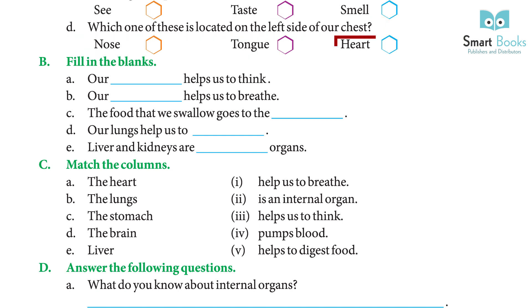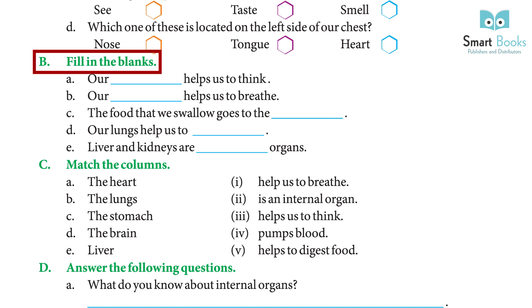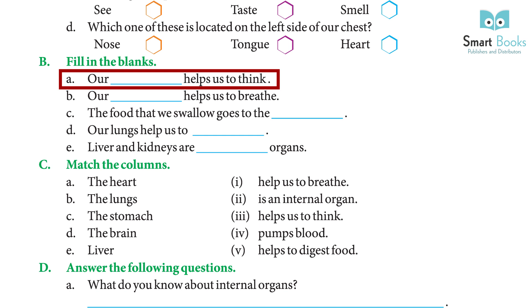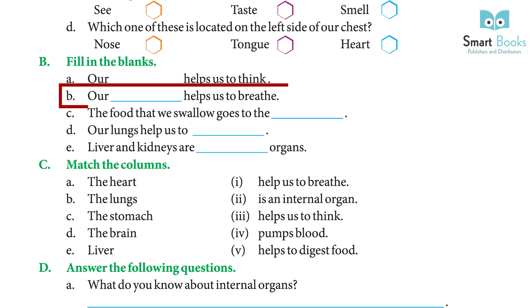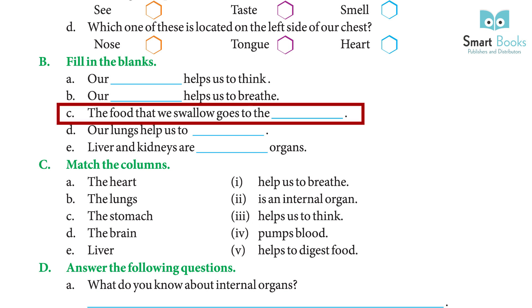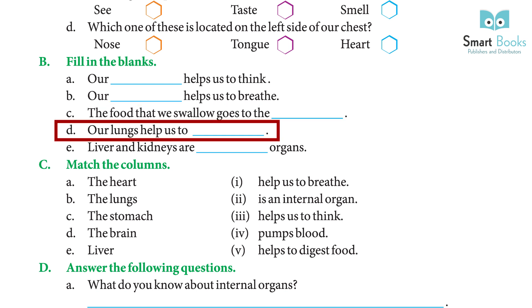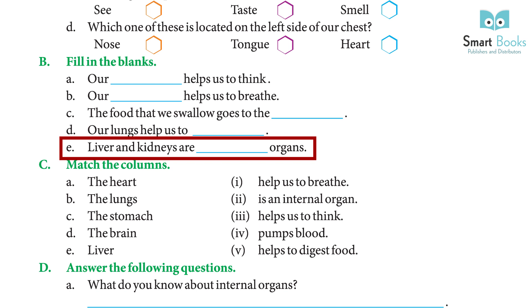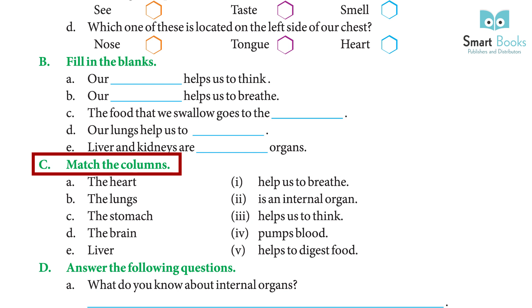D: Which one of these is located on the left side of our chest? Nose, Tongue, Heart. Answer: Heart. Fill in the blanks. A: Our blank helps us to think. Answer: Brain. B: Our blank helps us to breathe. Answer: Lungs. C: The food that we swallow goes to the blank. Answer: Stomach. D: Our lungs help us to blank. Answer: Breathe. E: Liver and kidneys are blank organs. Answer: Internal.